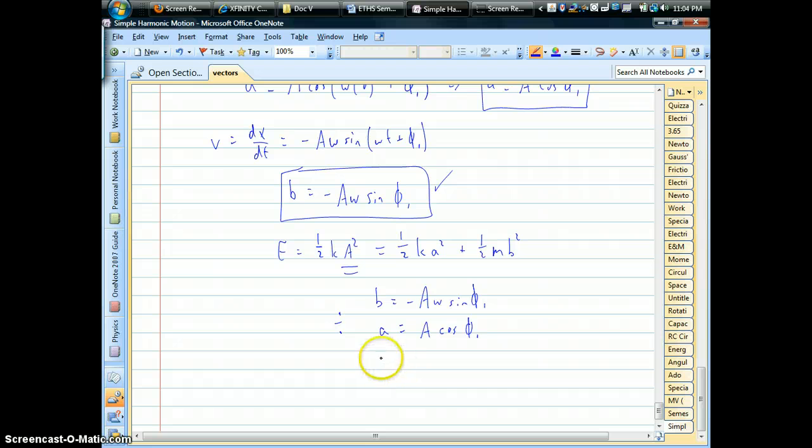And what you'd have is this ratio here. Notice how the amplitudes would actually cancel out. You'd have negative omega times sine of your phase angle divided by cosine, which would be tangent.